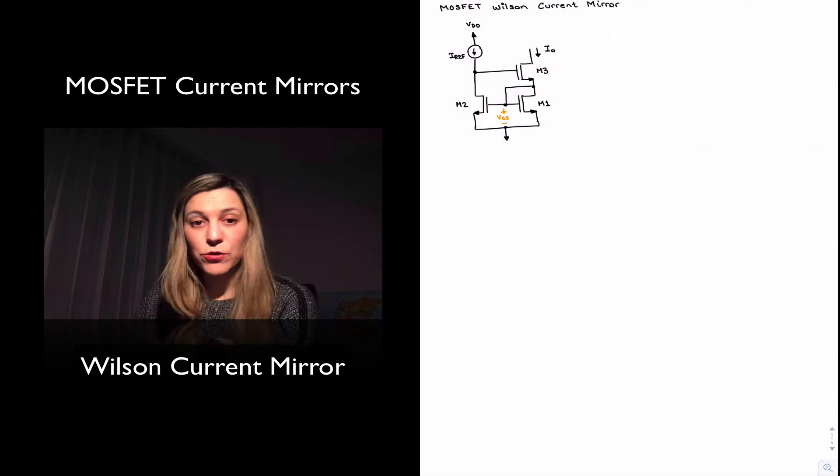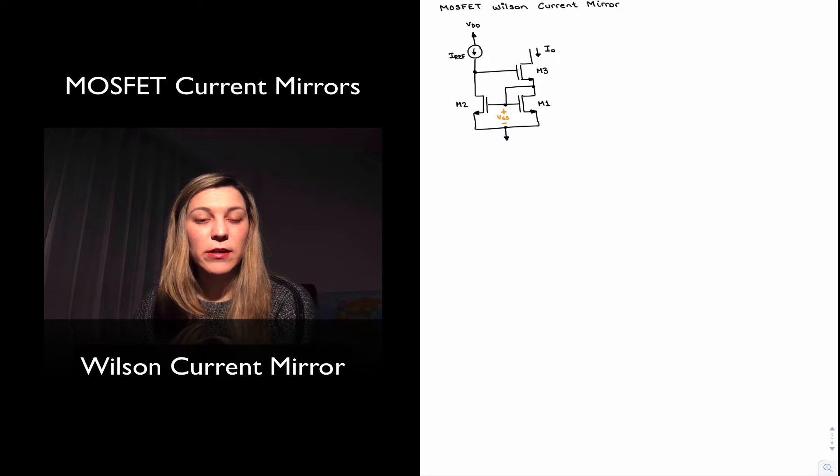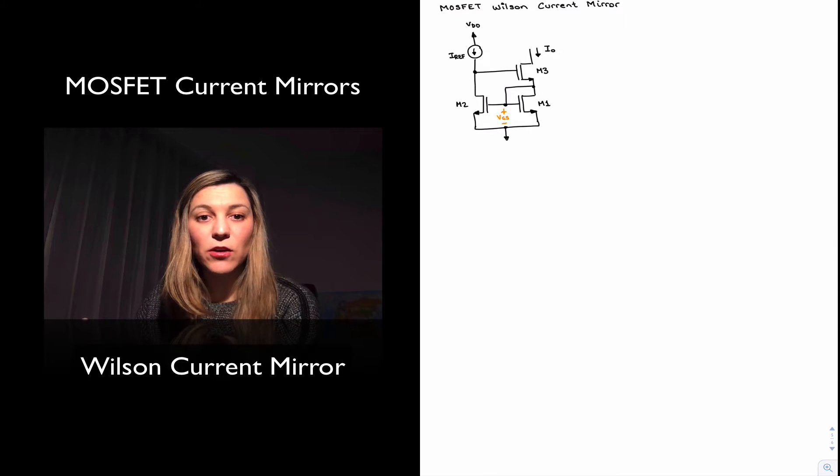The two things that we want to know about this new current mirror are the current transfer ratio, which will give us an idea of the accuracy of the current source, meaning how close the output current is to the reference current, as well as the output resistance.